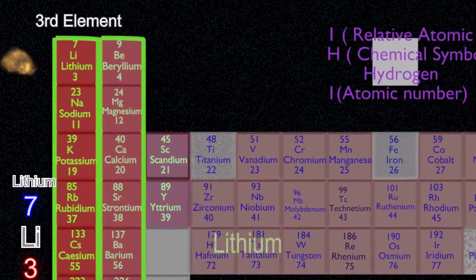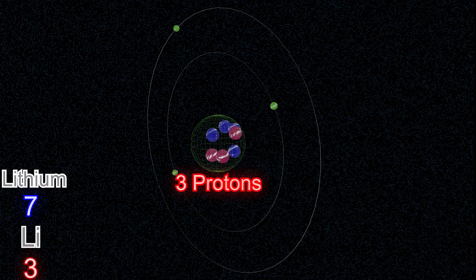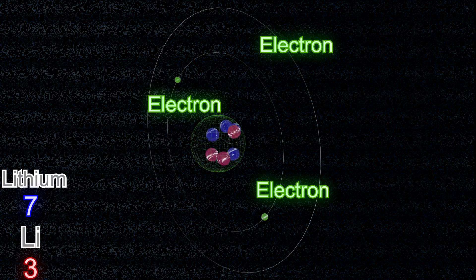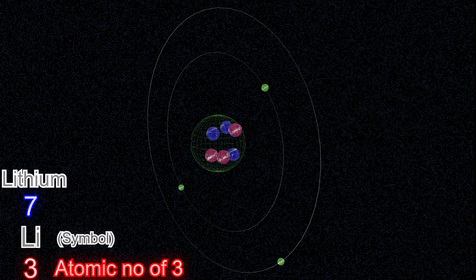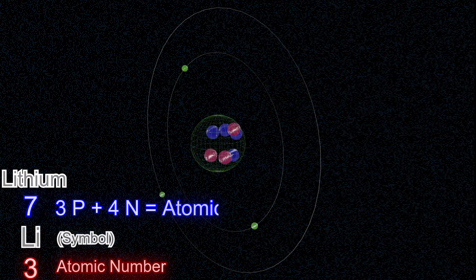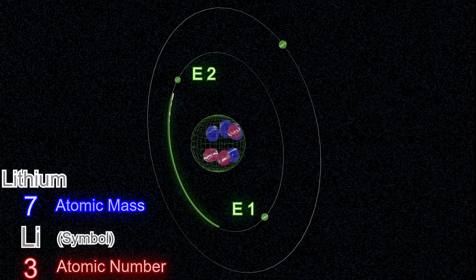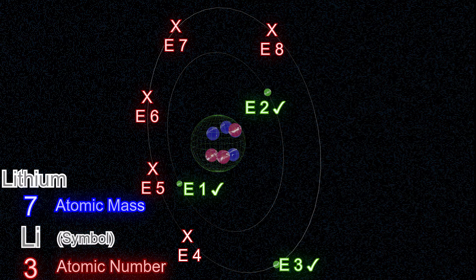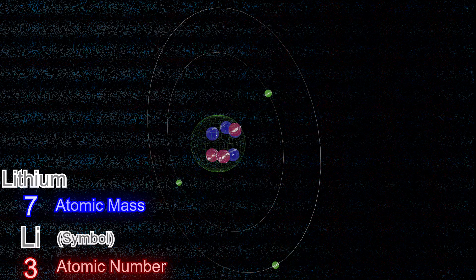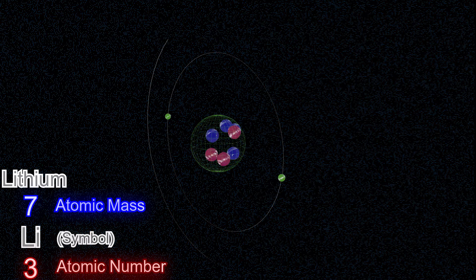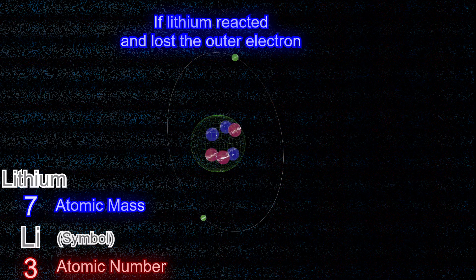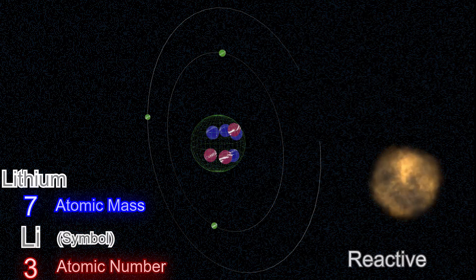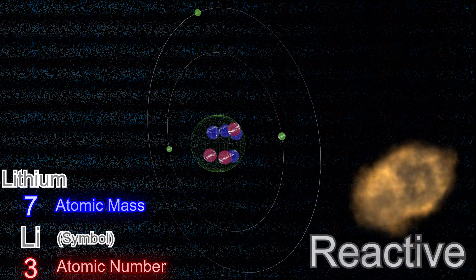Lithium atom is the third element in the periodic table. It has three protons, four neutrons, and three electrons. Three protons means its atomic number is 3. Three protons and four neutrons mean its atomic mass is 7. Two electrons are in the inner shell and one electron is in the outer shell. The outer shell can accommodate 8 electrons in total to make the shell complete or stable. Lithium always tries to get rid of the outer electron and make itself stable. If it got rid of the outer electron, it will only have the inner shell with two electrons making it stable. Its willingness to lose the outer electron is what makes lithium a very reactive element.